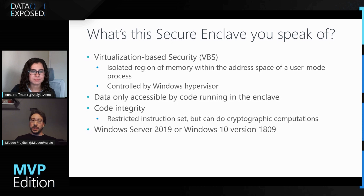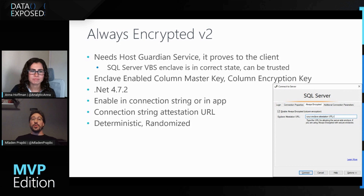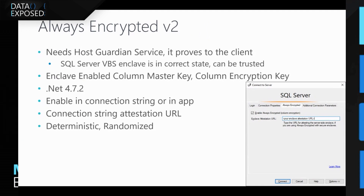The version of Windows you need for this to work is either Windows Server 2019 or Windows 10 version 1809. Always Encrypted version one only needed SQL Server — no other dependencies. For version two, this changes. You need something called a Host Guardian Service, which basically proves to the client that the VBS enclave of the SQL Server is in the correct state and can be trusted.